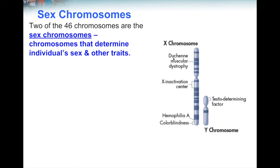For instance, the X chromosome carries information about Duchenne muscular dystrophy. A person born with this disorder has muscles that are damaged and weaken over time, causing problems with movement, walking, and even eating and swallowing. The X chromosome also has information on hemophilia A — when you get a cut, eventually you stop bleeding because your blood clots, but a person with hemophilia A, their blood doesn't clot, so they continue bleeding longer than normal. The X chromosome also holds information on colorblindness.